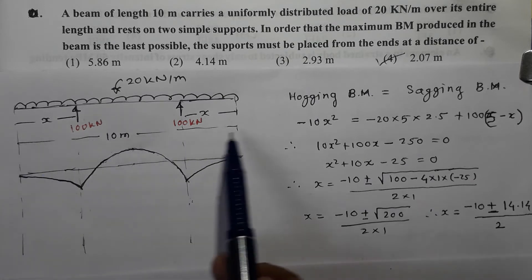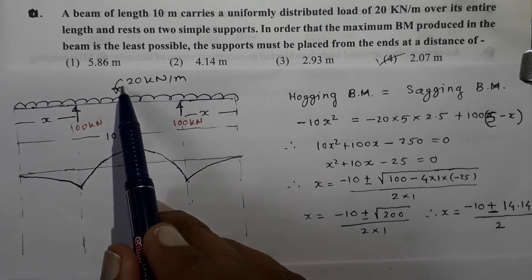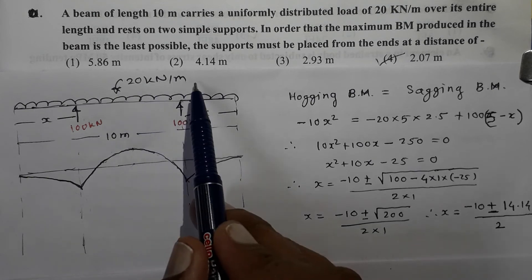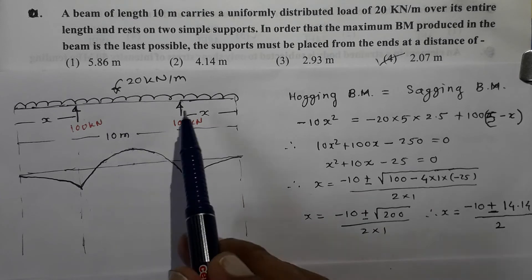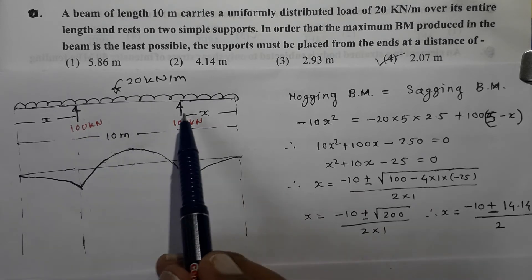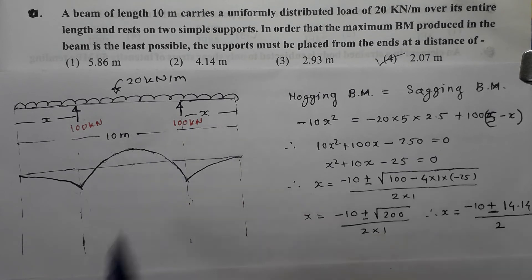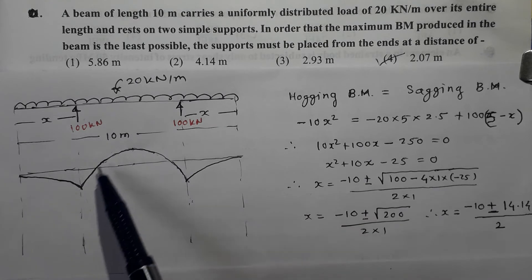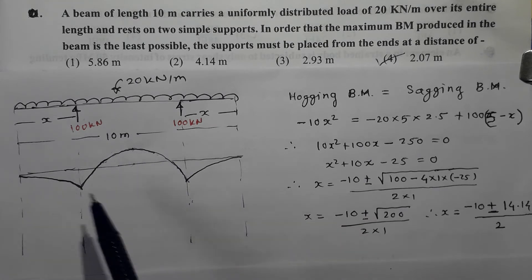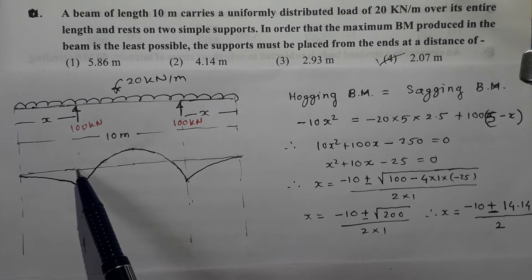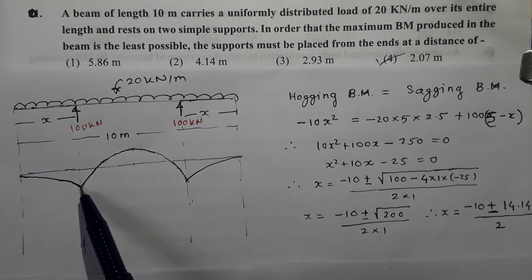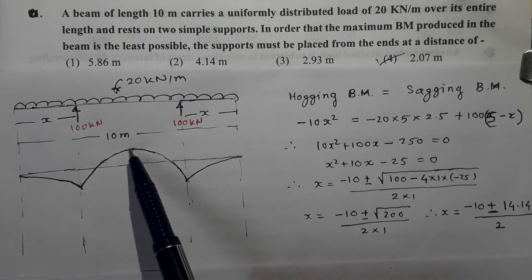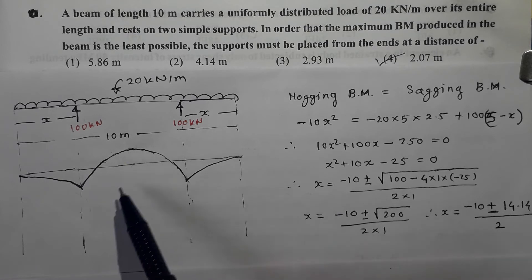The entire length of the beam is 10 m. The UDL running over the entire span is 20 kN per meter. The total load will be 20 × 10, that is 200 kN. The reactions at the supports are going to be 100 kN each. If I draw the bending moment diagram for this beam, the maximum hogging bending moment appears at the two supports, and at the middle of the beam there will be a maximum sagging bending moment.